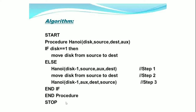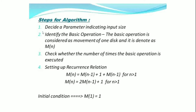Now let us see the algorithm in steps one by one. Step 1: Decide a parameter indicating the input size. Step 2: Identify the basic operation. The basic operation is considered as movement of 1 disk and it is denoted as m(n). Step 3: Check whether the number of times the basic operation is executed. Step 4: Setting up recurrence relation. m(n) = m(n-1) + 1 + m(n-1), for n greater than 1.